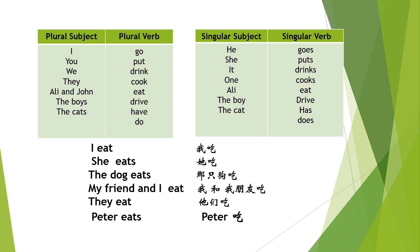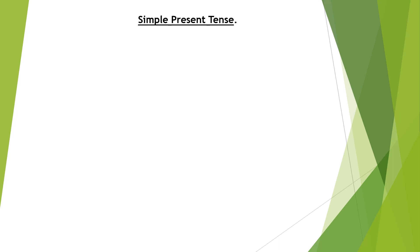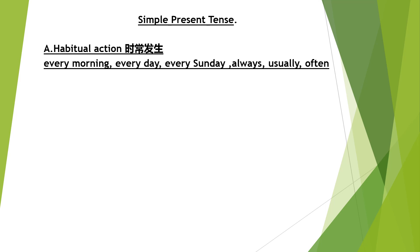Whenever we talk about the verb with S or without the S, we are actually talking about the simple present tense. We use the simple present tense for habitual action — habitual action means something that happens regularly. How do you know the action is habitual? You will have words like every morning, every day, every Sunday, every night, every weekend — and there are many more.